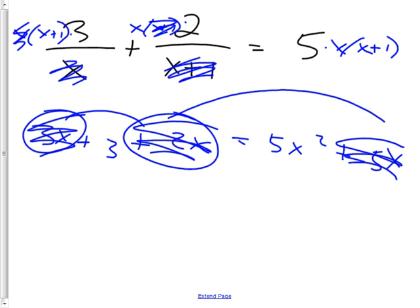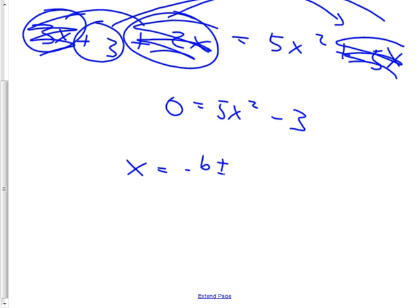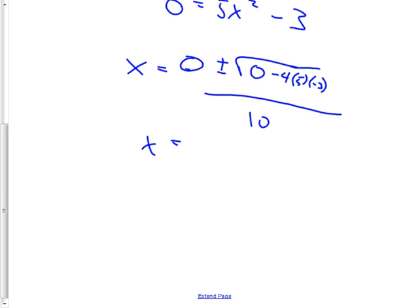Get the 3 to the other side — it was positive 3 so it becomes negative 3, and we have 0 = 5x² − 3. Does that look like it's going to factor? Nope. So go right to the quadratic formula: x equals negative b — wait, what is b? It's zero. So zero plus or minus the square root of zero minus 4 times a times c, all over 2 times 5, which is 10. a is 5, c is negative 3.